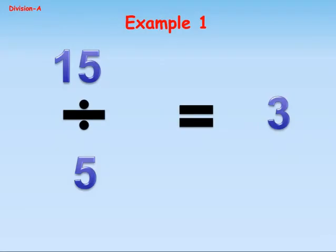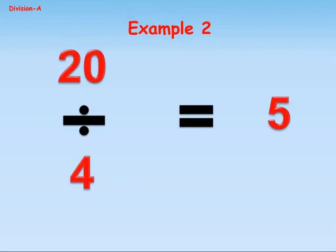Example 1: 15 divided by 5 equals 3. Example 2: 20 divided by 4 equals 5.